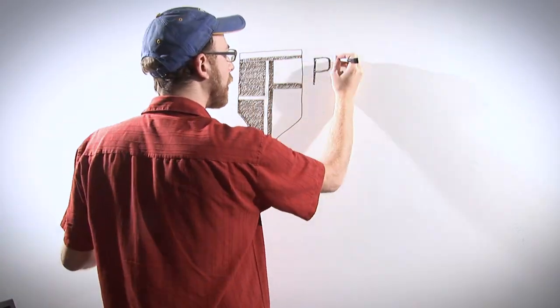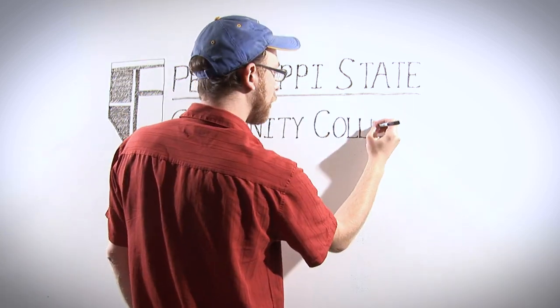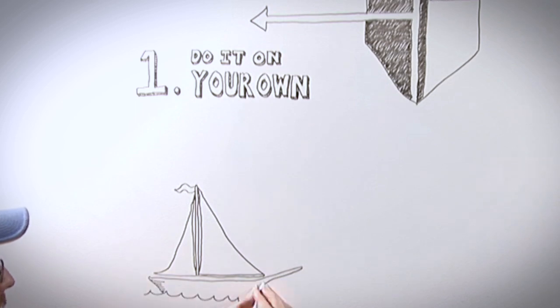At Pellissippi State, some programs offer you two ways to go through the classes you need to earn your degree. You can do it on your own. This means you decide which classes you want to take and when you want to take them.